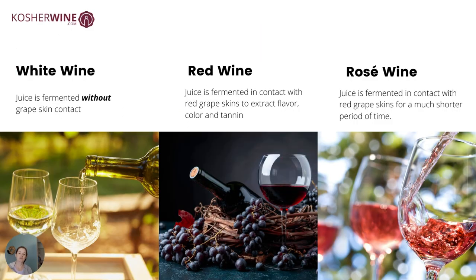Of course, there are three different types of wine — not including ports, sherries, or your fortified wines. Typically you're looking at a white wine, which is made from a grape without any skin contact. So red grapes can actually make white wine — the skins just aren't involved. White wine is made without skin contact because, with few exceptions, all grape juice is white. Red wine is when juice is fermented and put in contact with the red grape skins to get flavor and color.